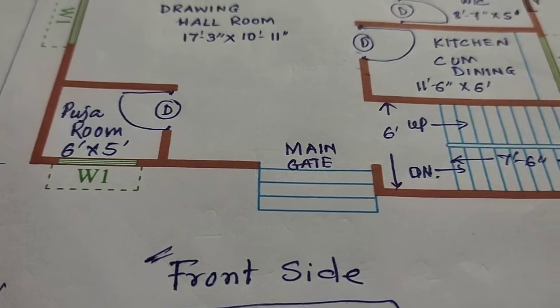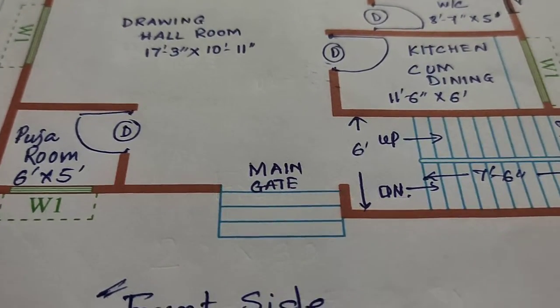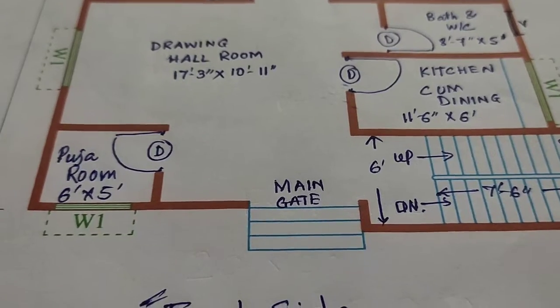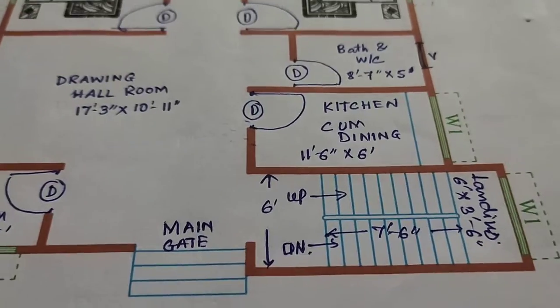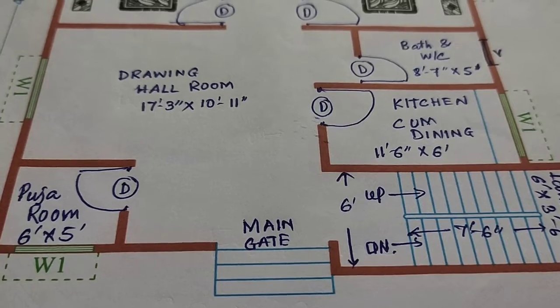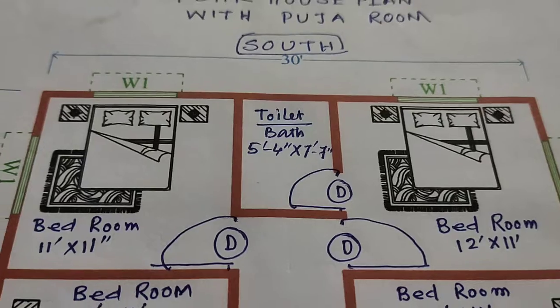You can see the full plan. Puja room left side, right side stair, kitchen, bath and drawing hall, puja room.